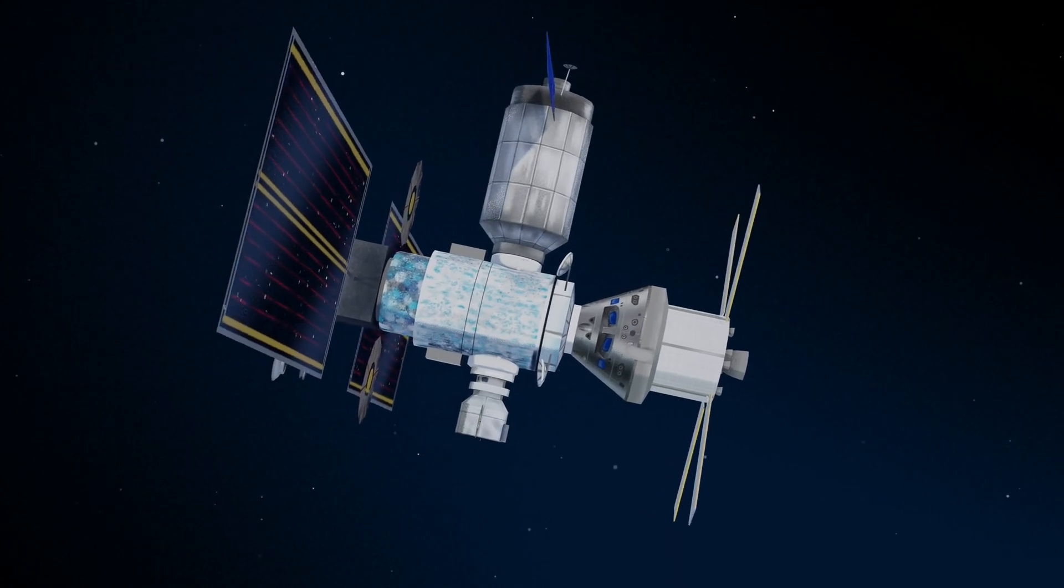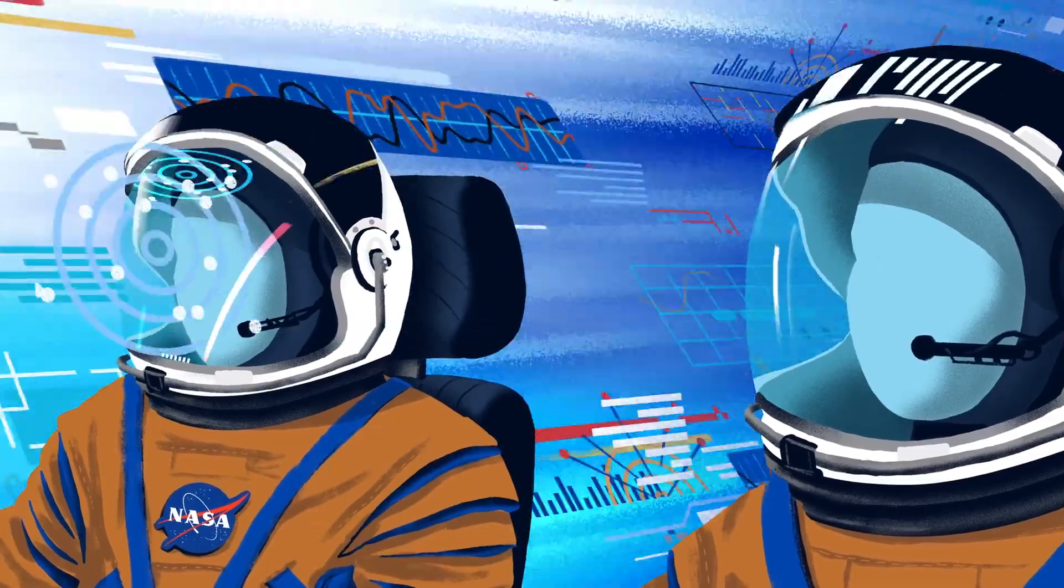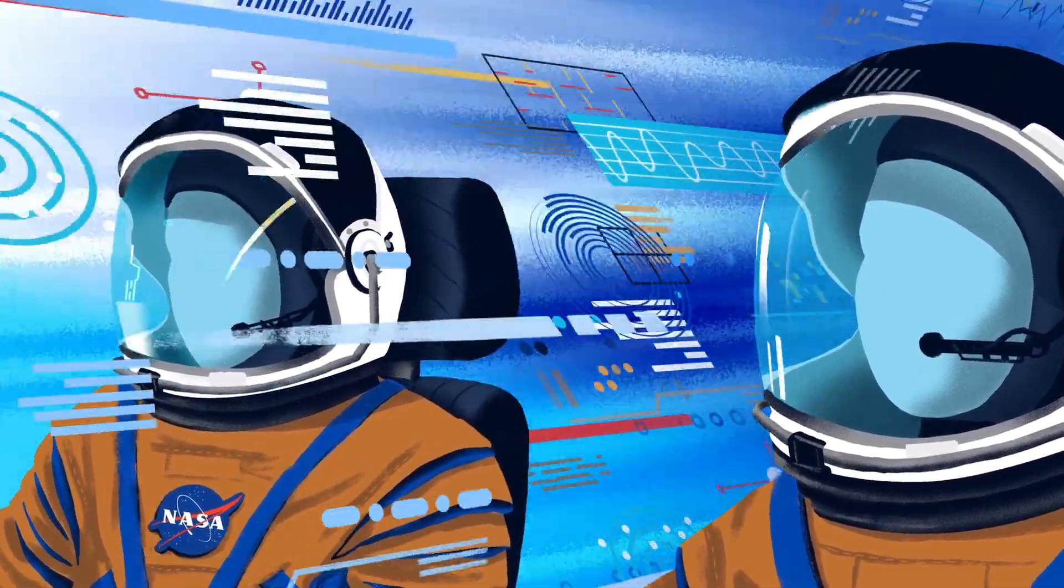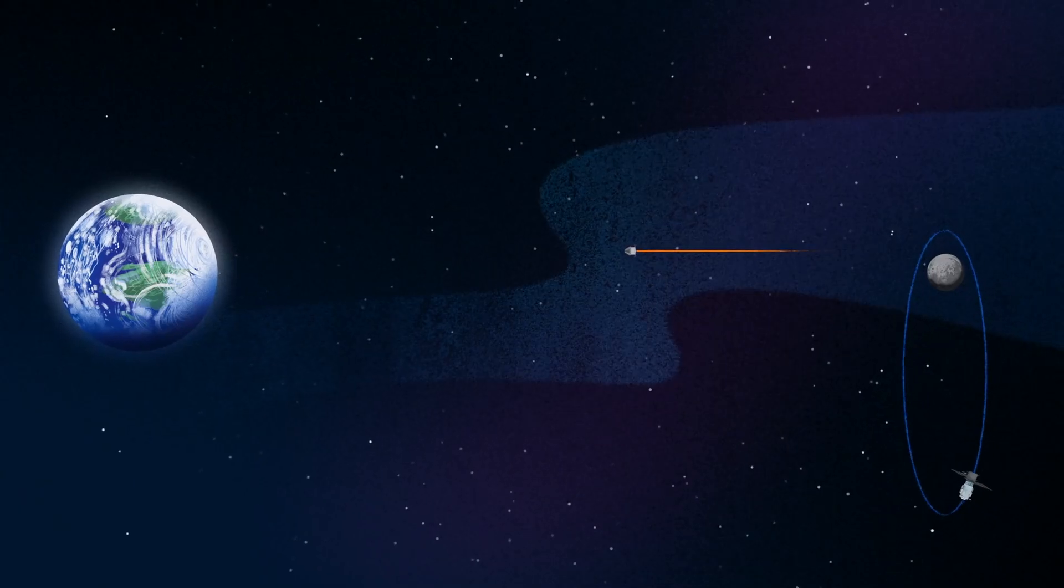Once back aboard the Orion spacecraft and undocked from Gateway, the crew fire their engine once to break out of the halo orbit, and once again to sling the spacecraft around the Moon, placing it on a multi-day trajectory back towards Earth.